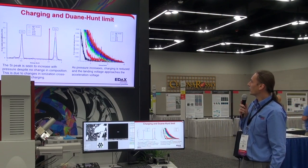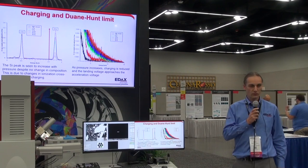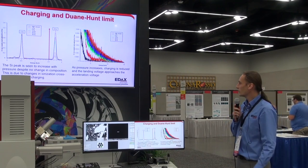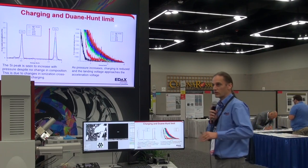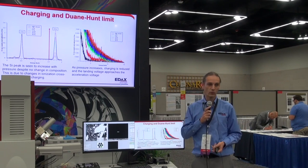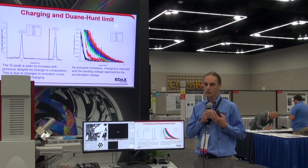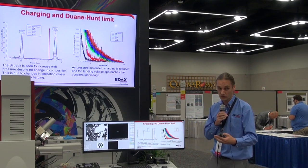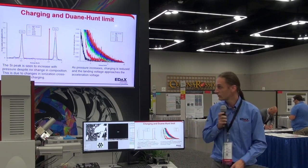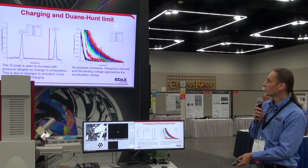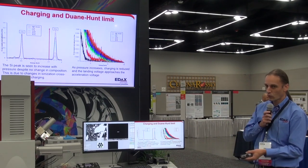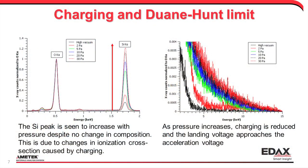At high vacuum, I'm not putting my electrons down with 15 kilovolts — I have about 3 to 4 kilovolts of landing energy. That translates into the overvoltage: we always talk about needing a certain amount of energy above the absorption line to ensure good excitation. As we decrease the pressure, we get more and more charging, less and less overvoltage, and less efficient ionization of the silicon — we get less silicon signal, even though the composition is the same.